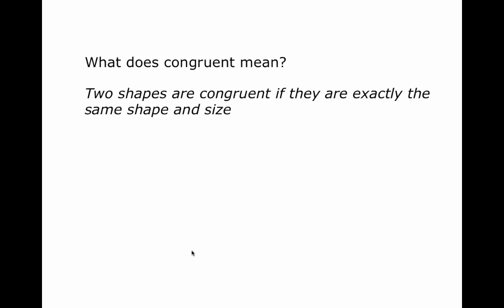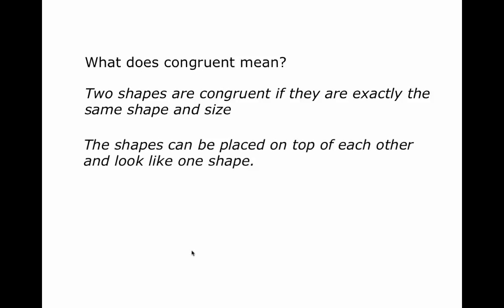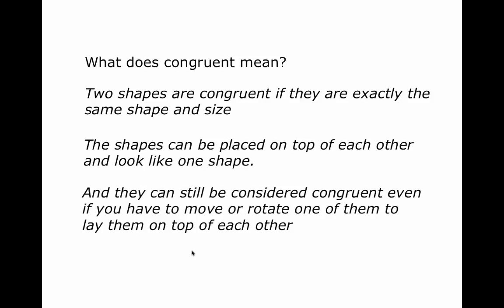Congruence is the following. Two shapes are congruent if they are exactly the same shape and size. The shapes could be placed on top of each other and look like one shape. And they can still be considered congruent even if you have to move or rotate one of them to lay them on top of each other and check.